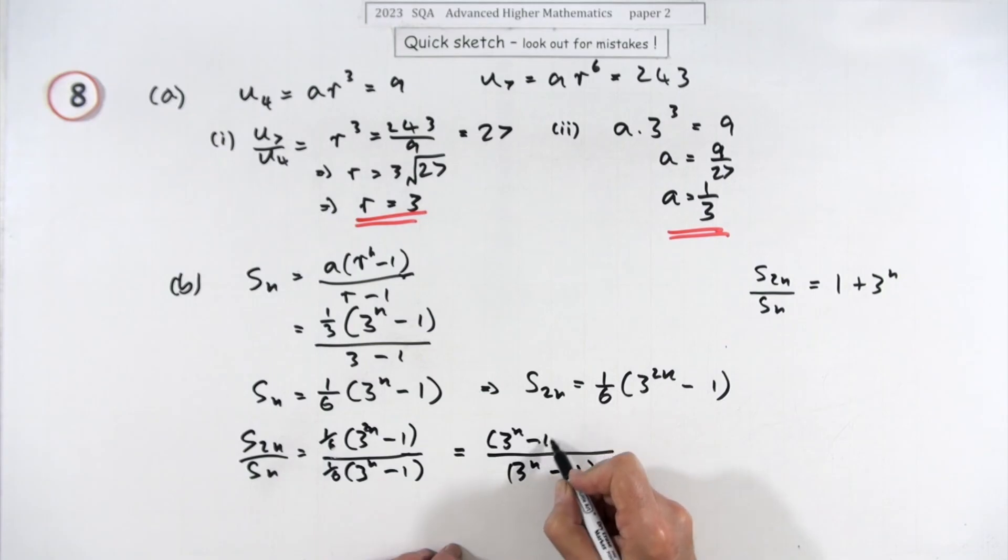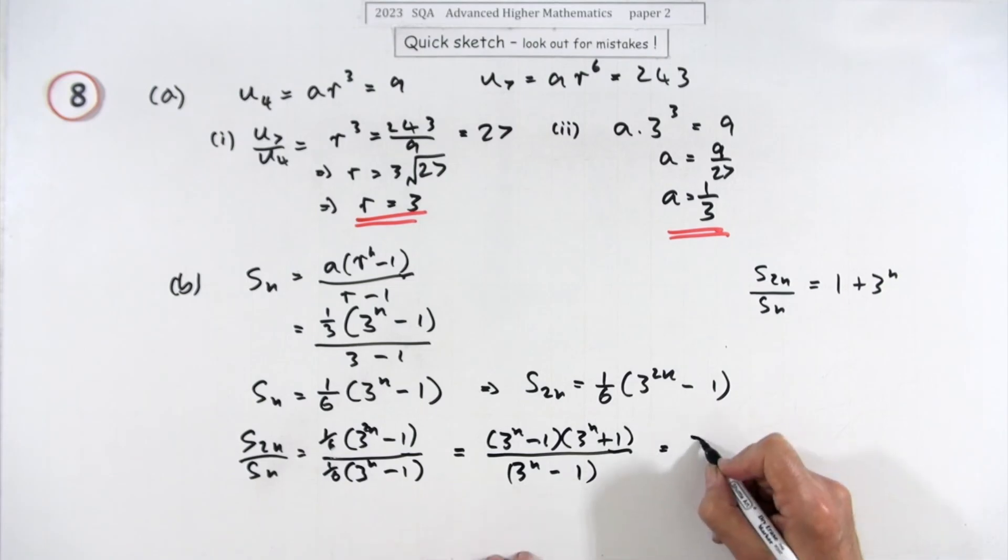They'll cancel out, and what you get is 3 to the power n plus 1. Okay, I've written it the other way around, and that's the answer. So it's a question.